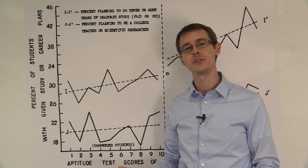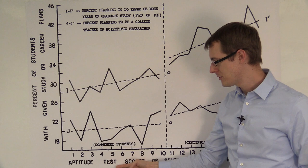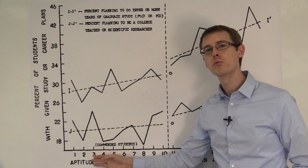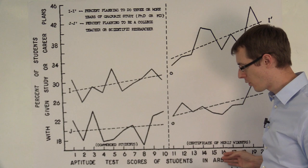So again, on our horizontal axis, we have the aptitude test scores of the students in arbitrary units. They've normalized them. Now, this is called the running variable in an RDD analysis, this variable that runs along the horizontal axis and determines whether you get treated or not.